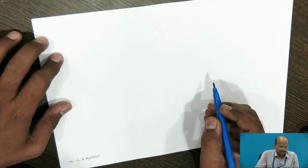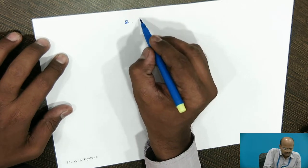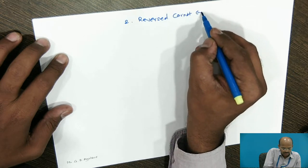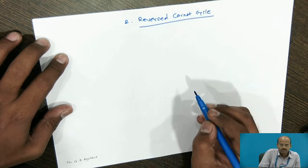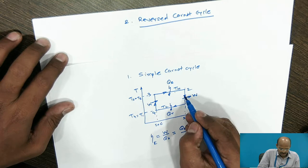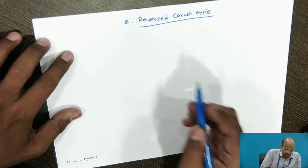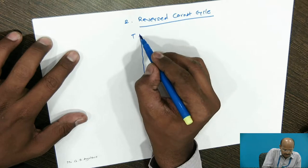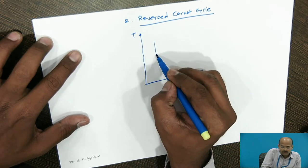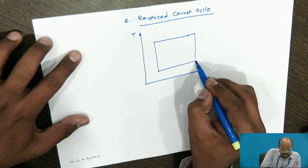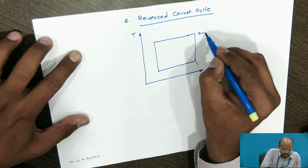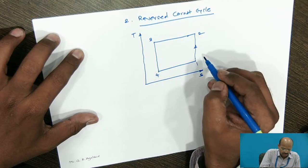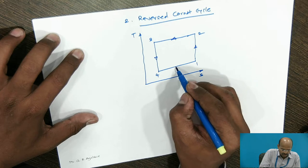In the reverse Carnot cycle, now we will see the reverse Carnot cycle. What I will do? I will just change the direction of the processes. Once again, I will show the rectangle that is the processes, 4 processes on the T-S plane. Then, 1, 2, 3, 4. I will change the rotation or direction. So, 1 to 2, 2 to 3, 3 to 4 and 4 to 1. This becomes a reverse Carnot cycle.